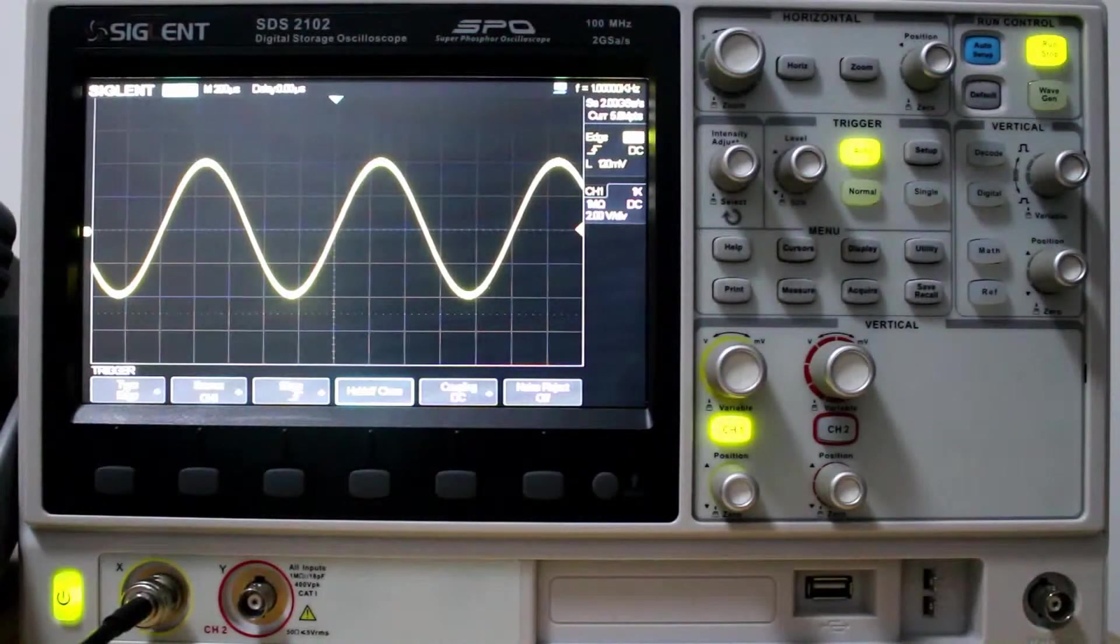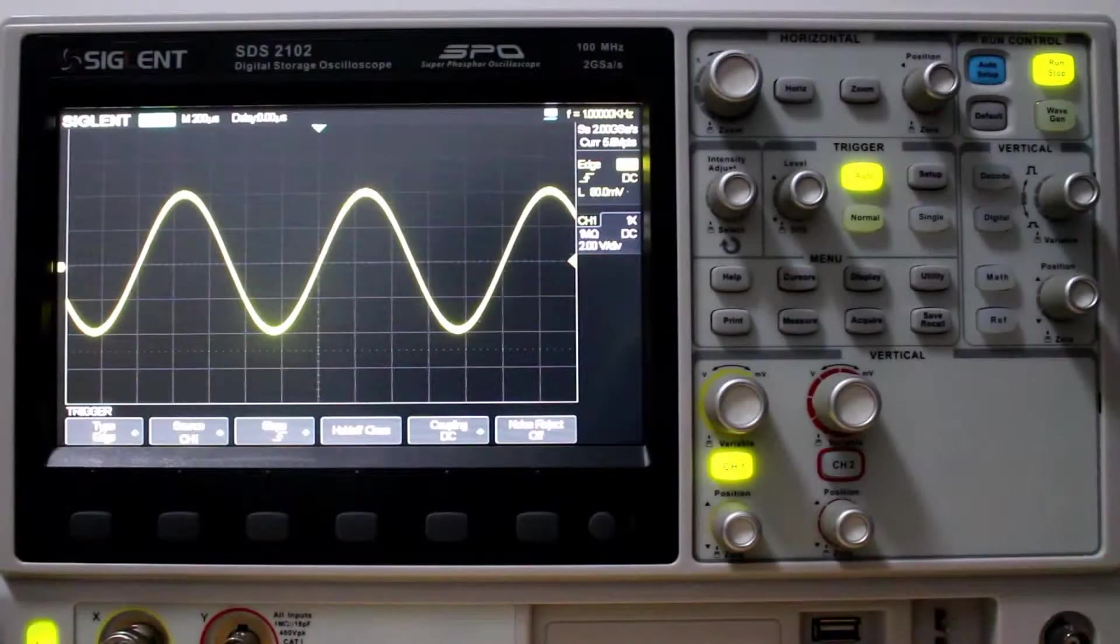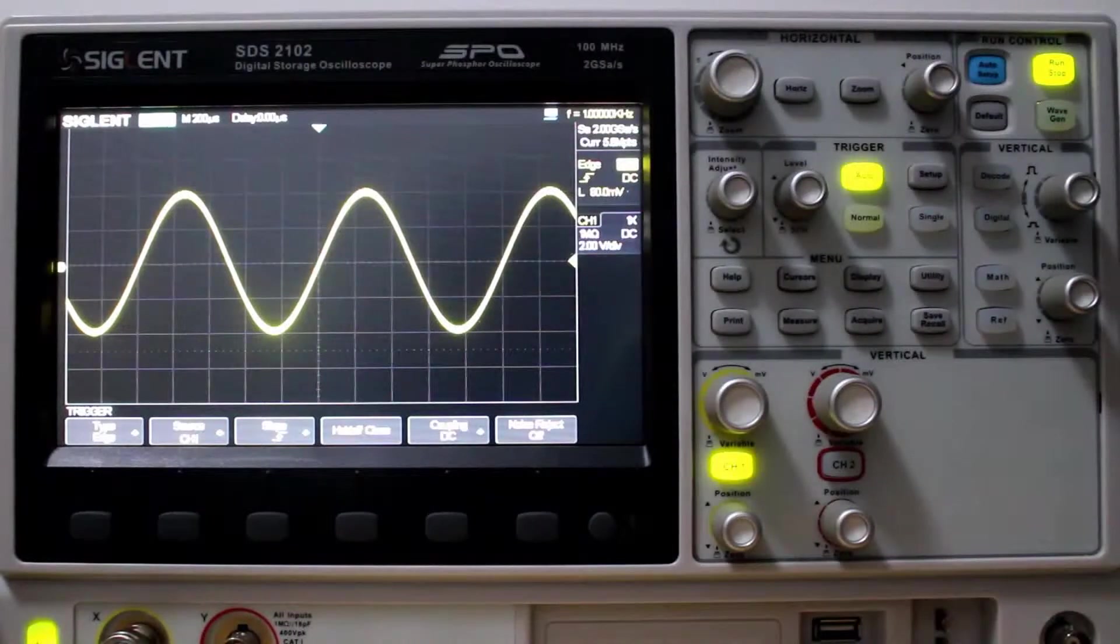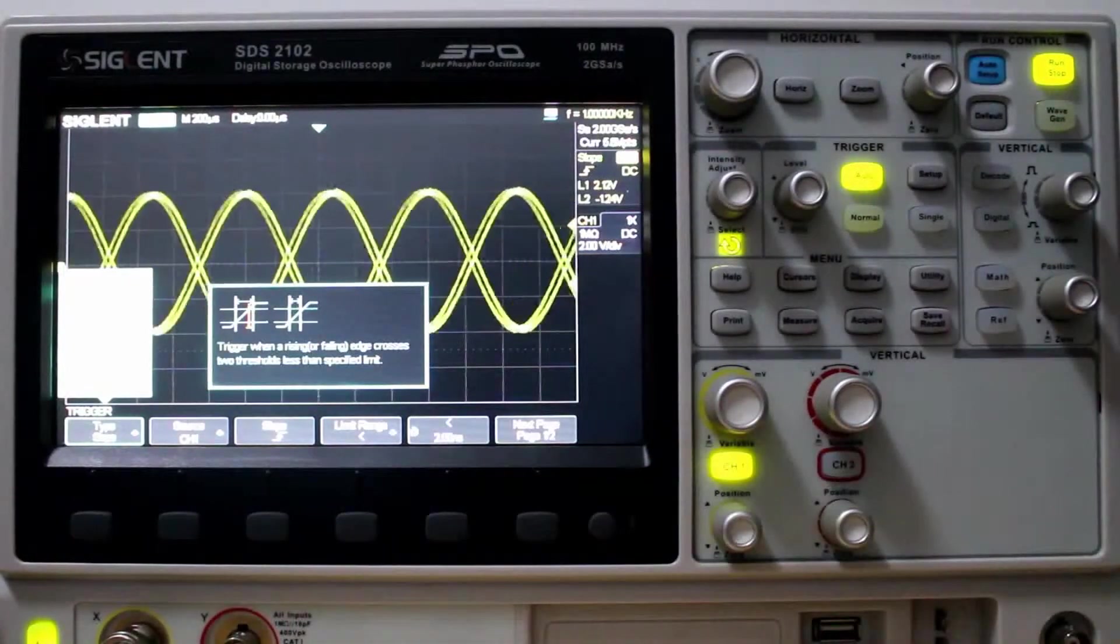And there you have it. Those are our trigger types. That's Edge to begin. So we looked at the Edge trigger type with a sine wave. Let's change it to Slope and a Ramp wave.